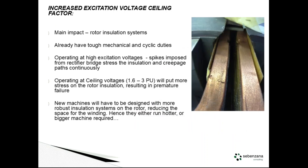Increasing the excitation voltage ceiling factor: currently we're looking at 1.6 per unit as the maximum; now they're saying push that to 3 per unit. Looking inside a rotor, we're looking at the slot liners and the turn insulation between turns. These already have a tough time from mechanical cyclic stresses — every time you run the machine up and down you're putting stress on the insulation. If you have static excitation systems, you're already getting high frequency pulses from the rectified bridges stressing that insulation. Now wanting to apply even higher voltage adds more stress and premature failure. New machines will need more robust insulation systems — more insulation means less copper, so they'll run hotter, or you build a bigger machine. In both cases, expense.